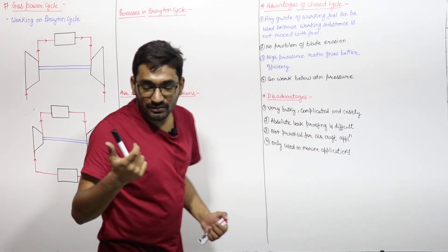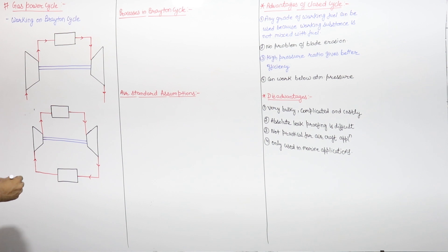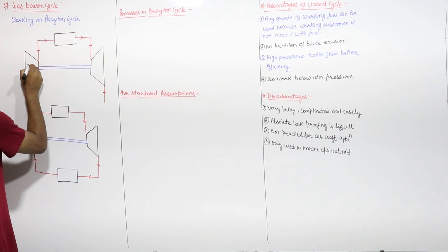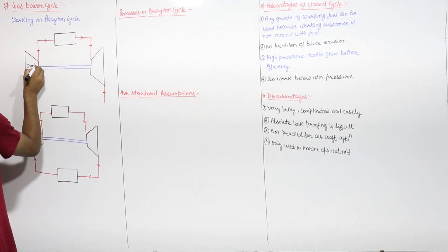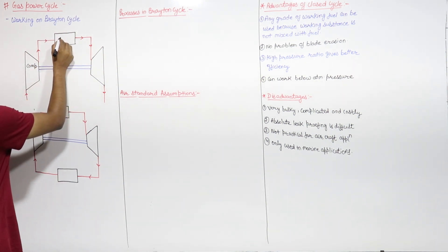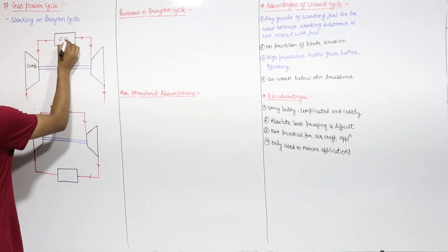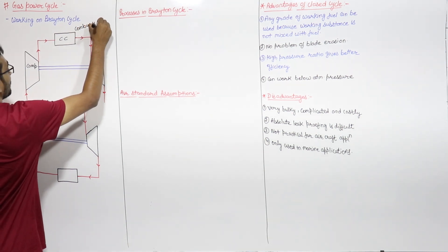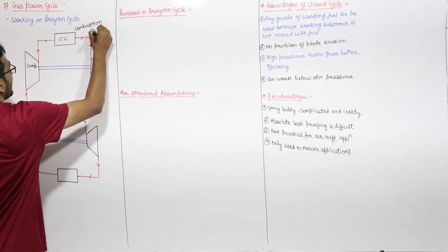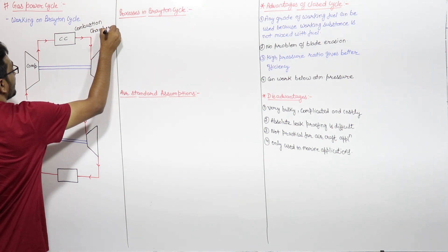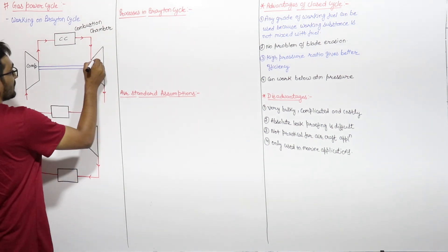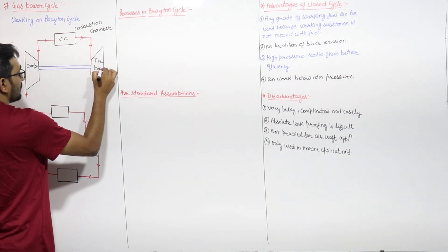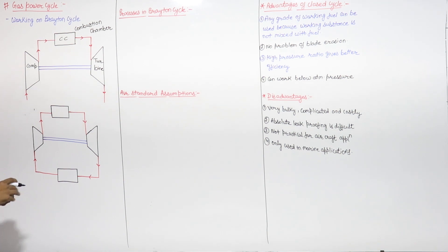The various components used in the gas power cycle are: first, the compressor, in which gas is compressed; second, the combustion chamber, in which heat is added to the gas; and third, the turbine, in which expansion takes place.